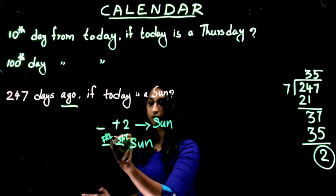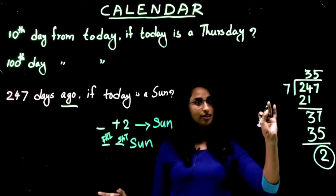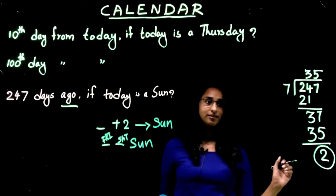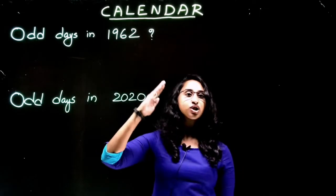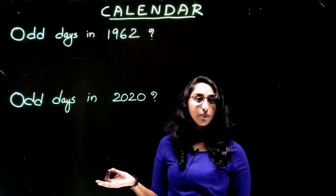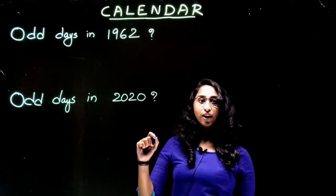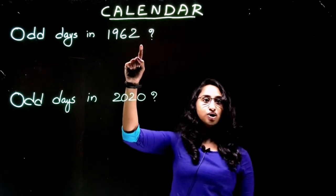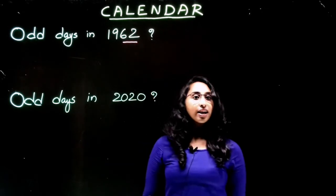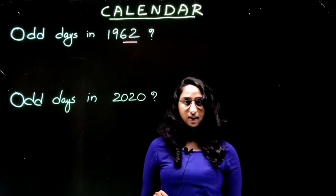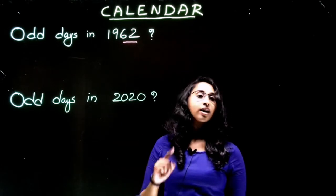How many odd days in the year 1962? 1962, is it a leap year or non-leap year? How will we find it? For that, check the last two digits of the year: 62. If it is divisible by four, we can say it is a leap year. In this case, it is 62 and it is not divisible by four, so this is a non-leap year.